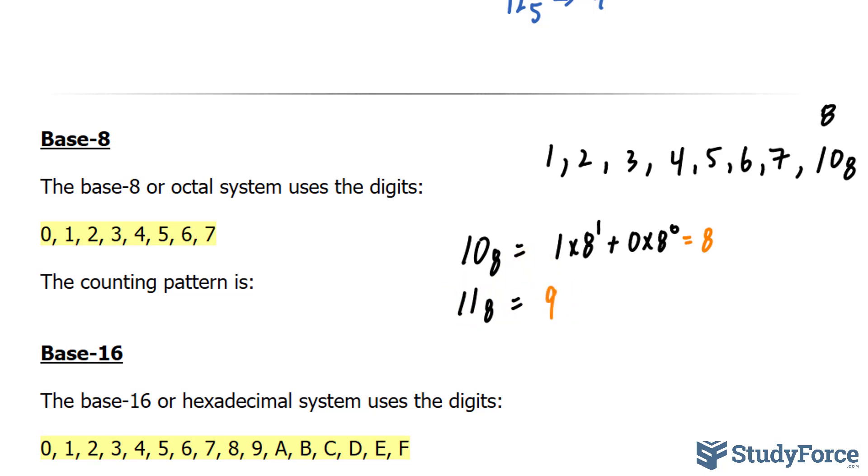And then number 10 would increase the 1's place value by 1, where we would have 1, 2, sub 8. Eventually, you will reach 1, 7, sub 8, and that is equal to 15. Since we can't increase this even more to 8, we would then change this place value, so that it becomes 2, followed by 0, sub 8, and that would be 16.